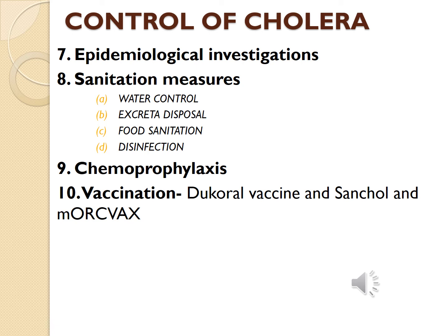In urban areas, properly treated drinking water containing free residual chlorine should be made available to all families, while in rural areas water can be made safe by boiling or chlorination. Regarding excreta disposal, provision of a simple, cheap, and effective excreta disposal system is a basic need for all human settlements. Human excreta should be properly disposed of away from water sources.